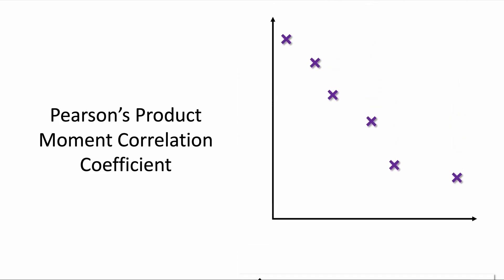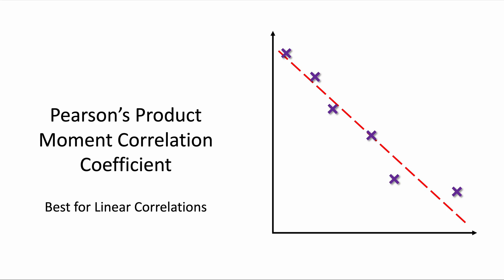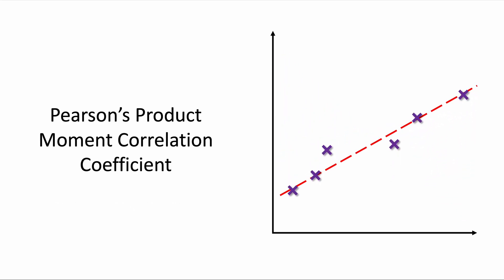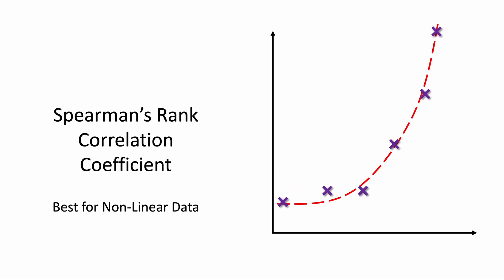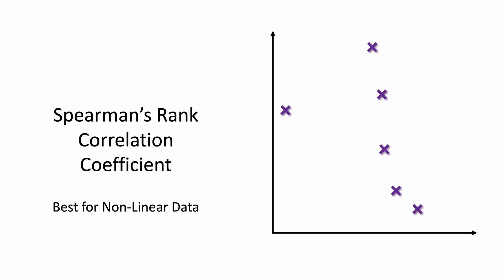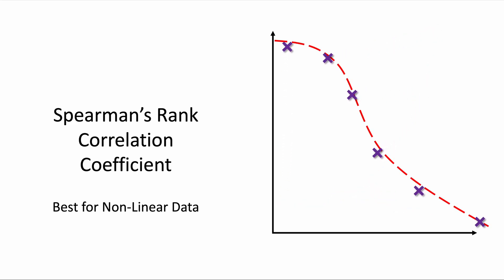We're going to compare Pearson's and Spearman's. Pearson's is best for linear data — data that generally fits a linear correlation, like the graph on the screen which has a very clear line of best fit that is a line. This is a linear correlation. Whereas Spearman's is probably best for non-linear data, data best fitted to a curve.